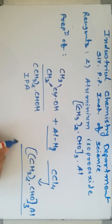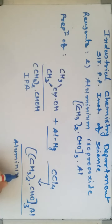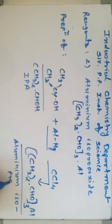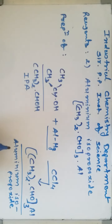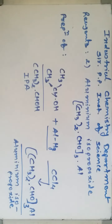The product is aluminum isopropoxide, [(CH3)2CHO]3Al. This is the preparation. We get the product when we distill the reactant mixture in the reactor.